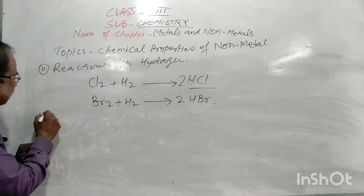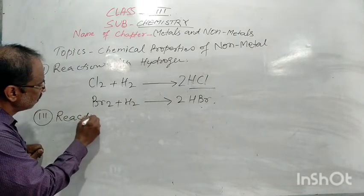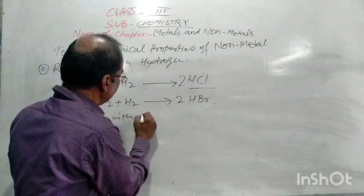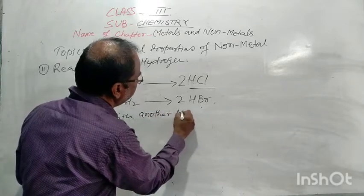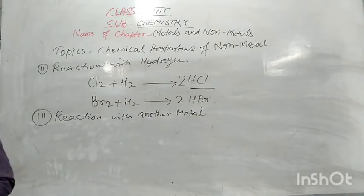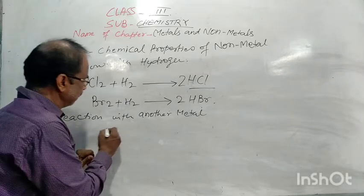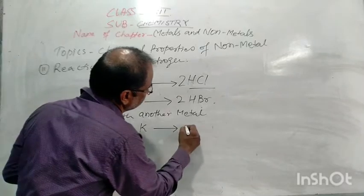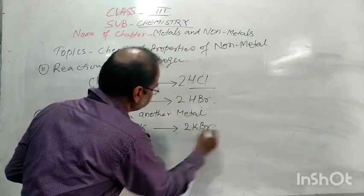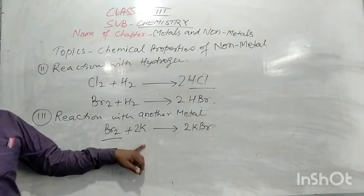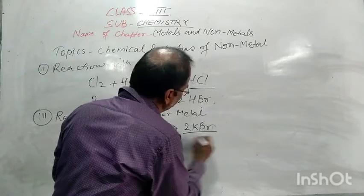Third property: reaction with another metal. When a non-metal reacts with a metal, it forms a salt. For example, Br₂ + K → 2KBr. Here bromine is the non-metal and potassium is the metal, forming potassium bromide.